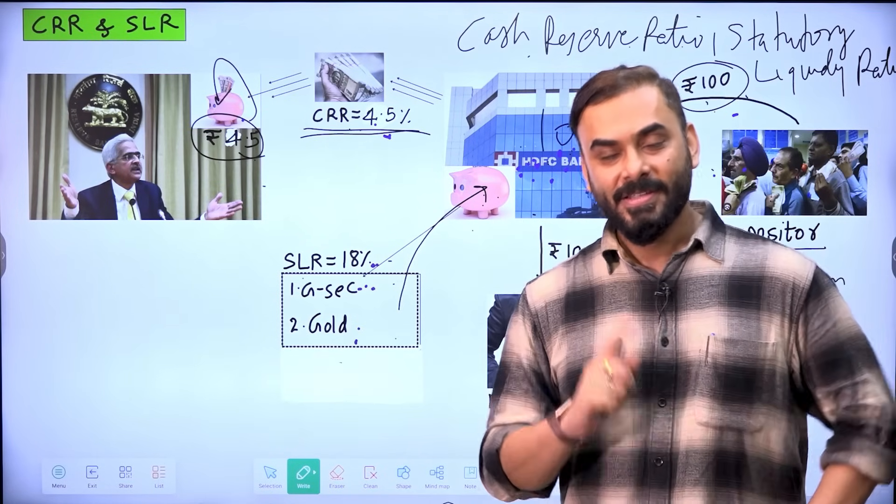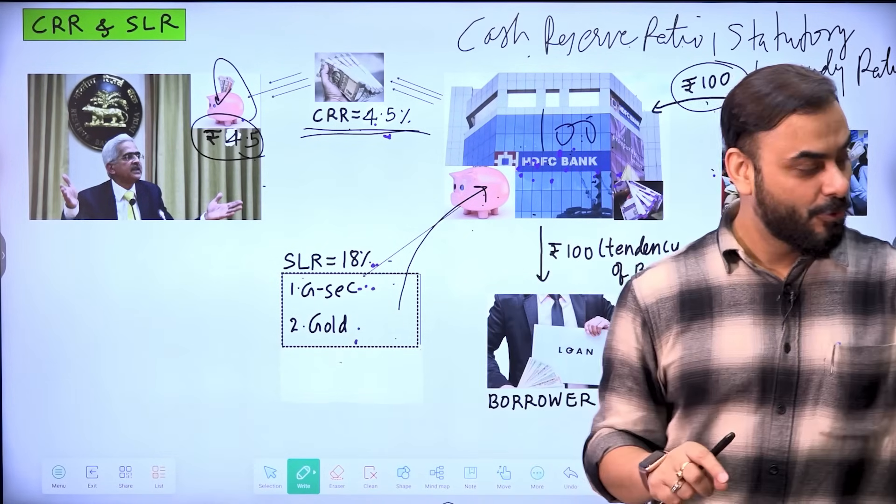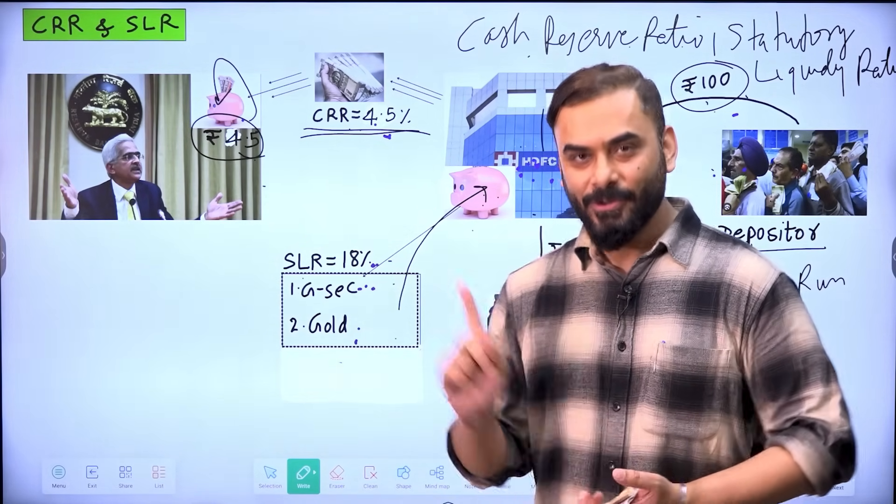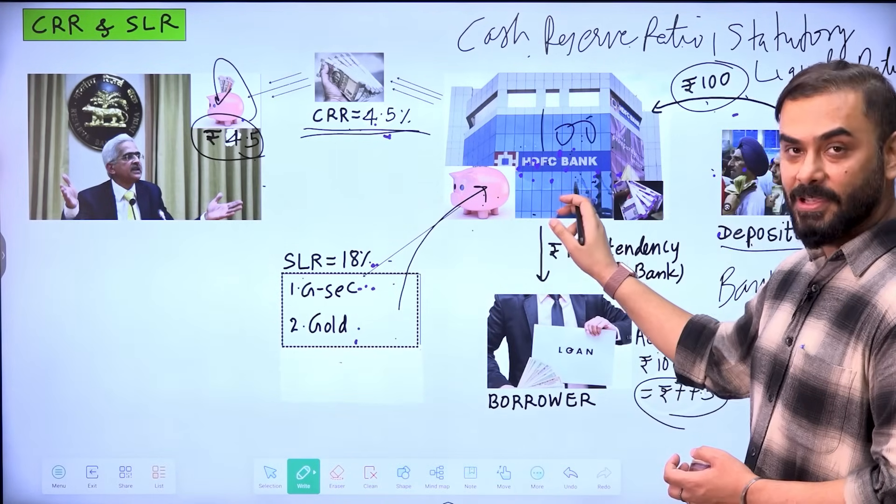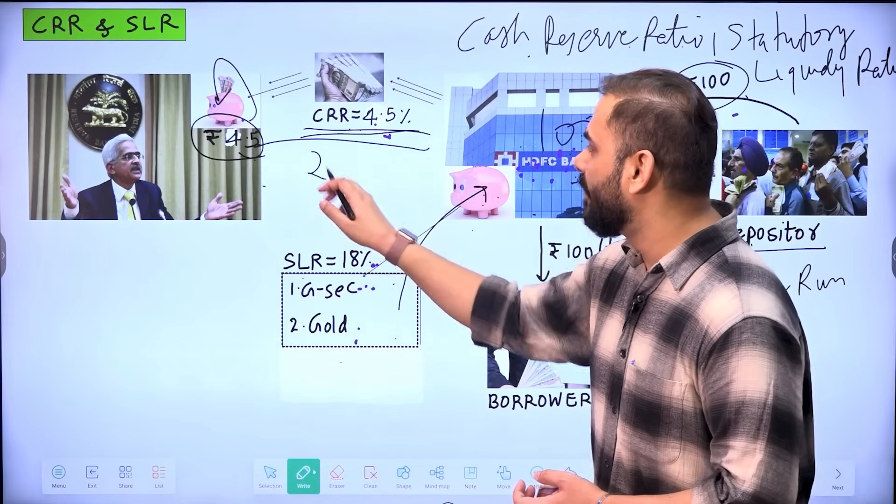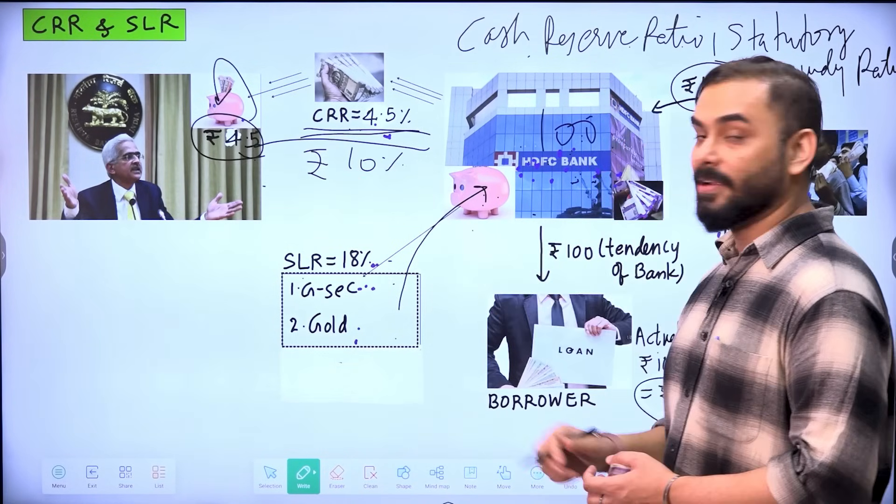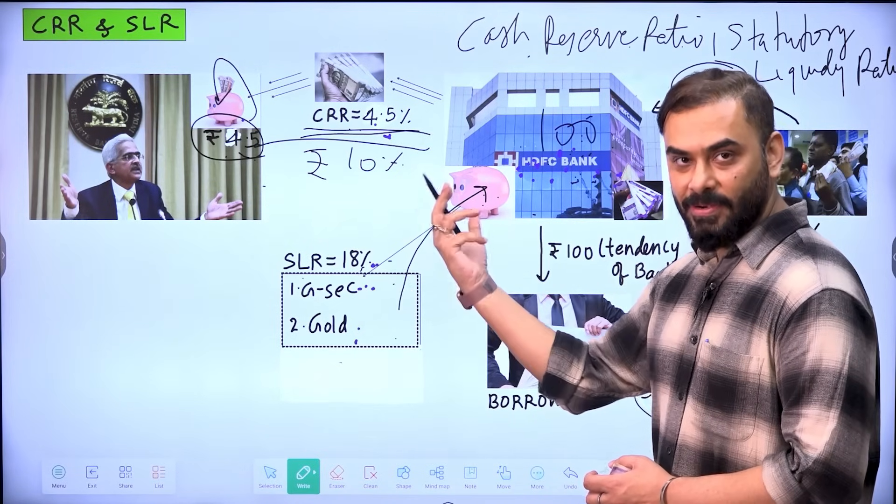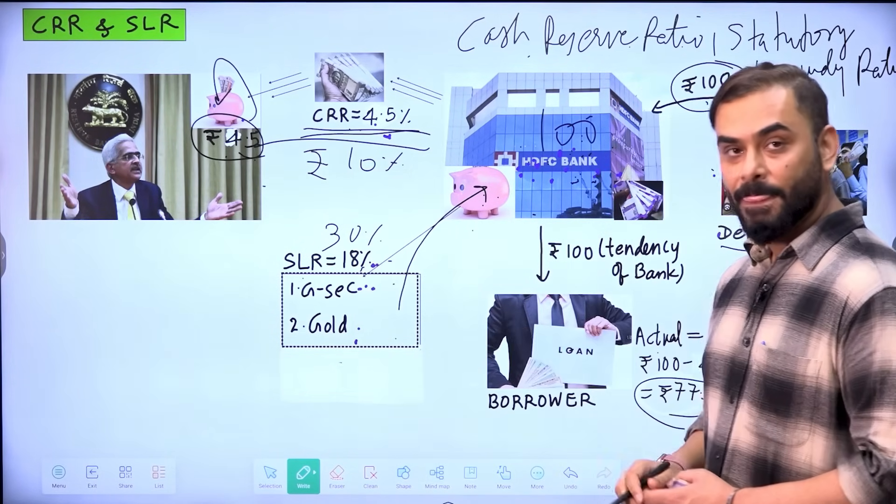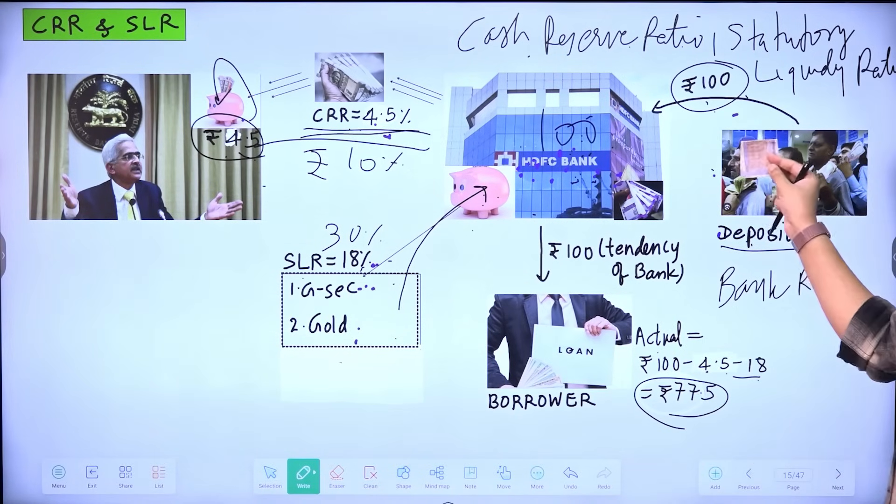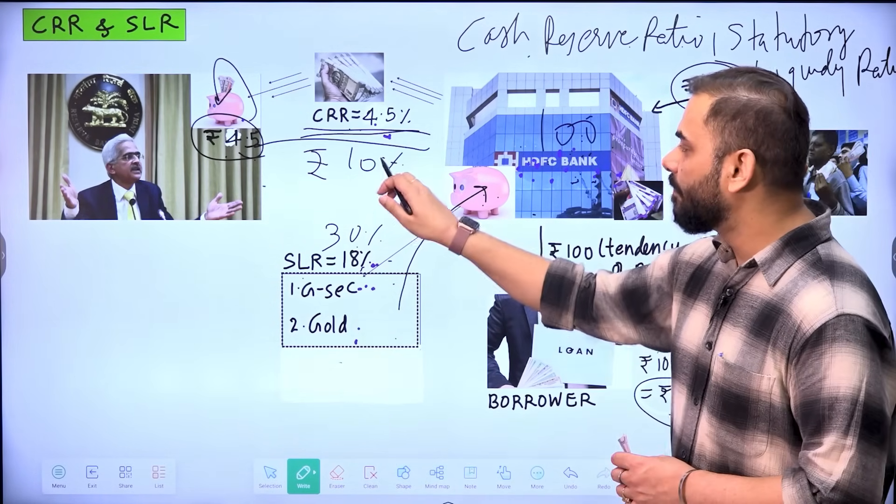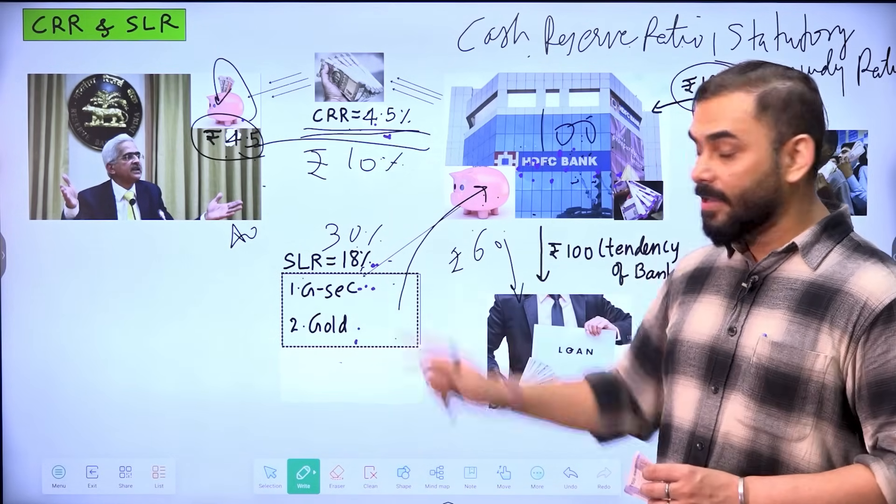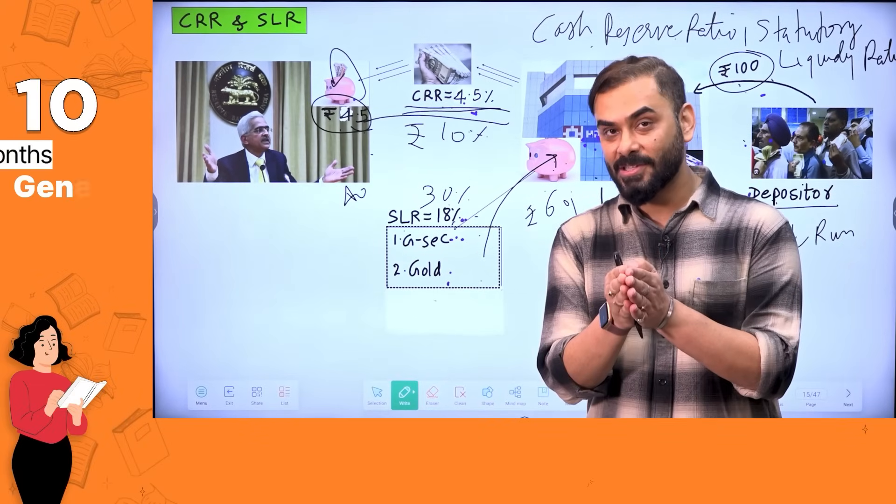If suppose Reserve Bank of India knows that these days in the economy people have too much cash and Reserve Bank of India wants that people should not have too much cash. What will Reserve Bank of India do? Reserve Bank of India will say that HDFC, please give more money as CRR. So instead of 4.5, please give 10% as CRR. So out of 100 rupees, please give 10 rupees to RBI as CRR and instead of 18%, for example, suppose that RBI keeps it as 30%. So what will happen? Every time 100 rupees will be deposited in the bank, from that 100 rupees, 30 plus 10, 40 rupees will go to RBI and bank will have only 60 rupees to offer as loan. Which means if CRR and SLR increases, what happens? The loan giving capacity of the bank comes down.